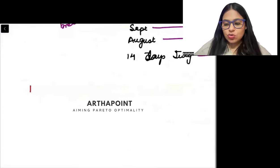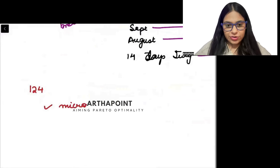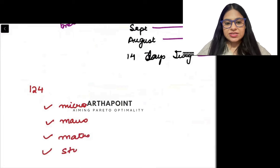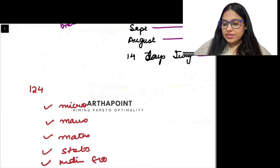124 days are left for you to give your exam. Effective number of days is just 124 days. In 124 days you need to go ahead and you need to cover up your micro, your macro, your maths, stats, Indian eco, and this is only for IIT JAM exam.